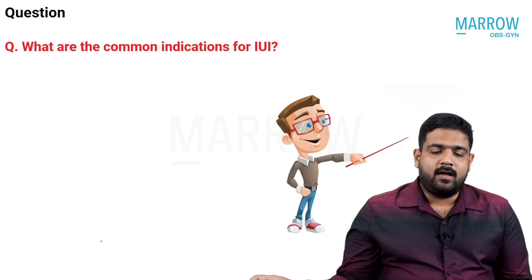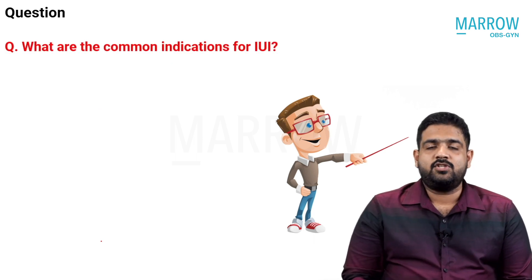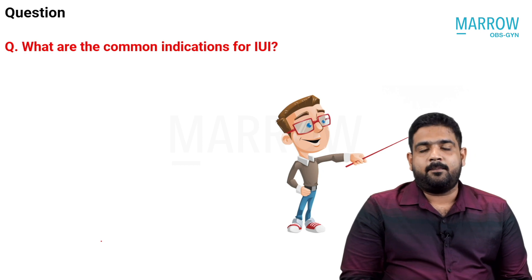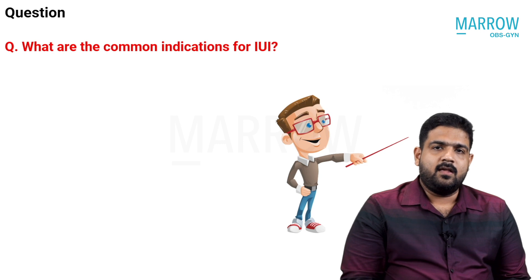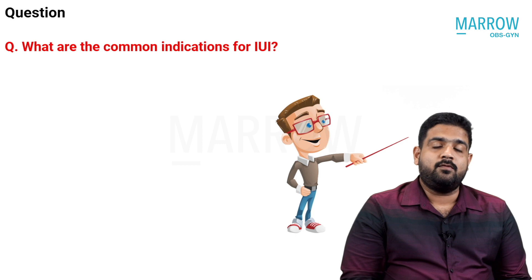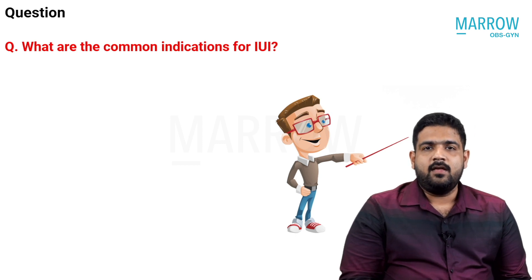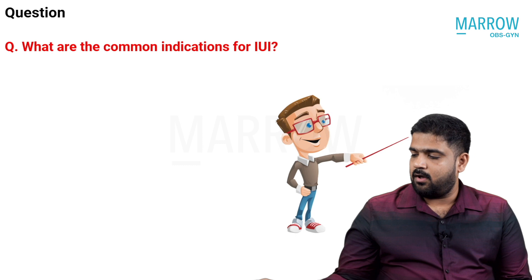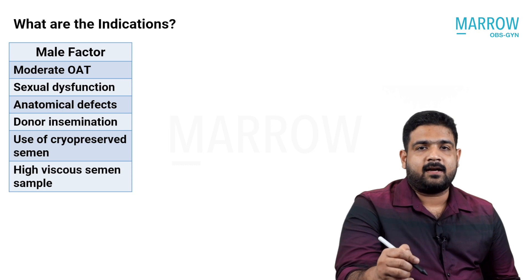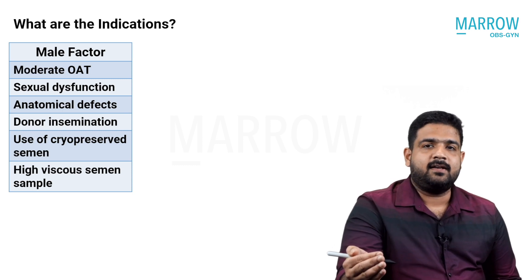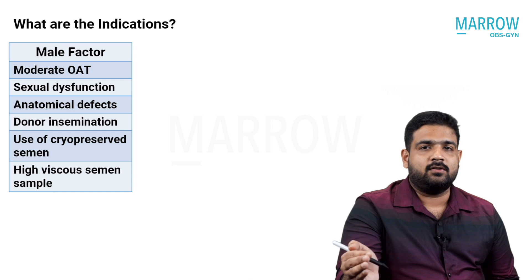So what are the common indications for IUI? Which couples do we prefer to offer IUI? IUI cannot be done for everybody — it may not benefit them and would just increase the cost of treatment and the emotional burden on the couple. We need to know who will benefit maximum from IUI and who should not have IUI. The common indications can be divided into three categories: male factor, female factor, and a combination of both.